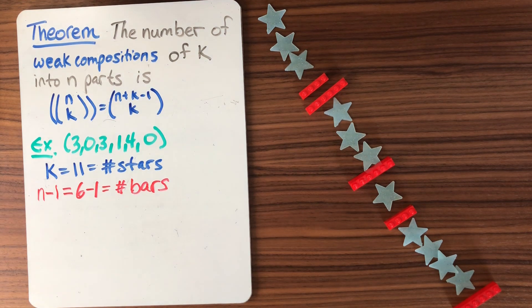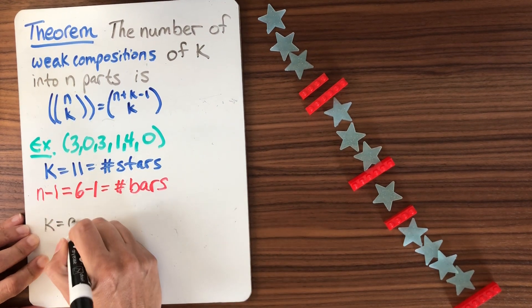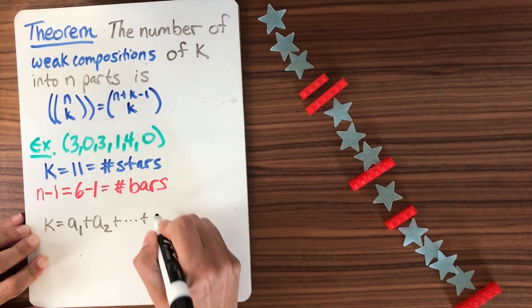And that, in fact, is my proof, right? So what we're going to do is we're going to have that k, we're going to have k is going to be the sum of the parts of your composition. So this is your number of stars.